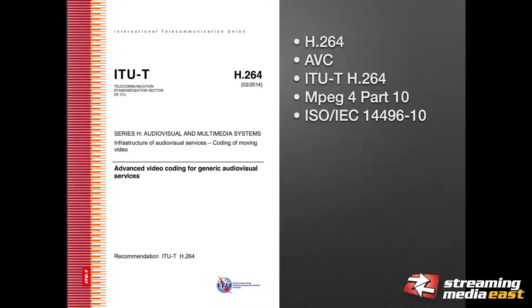Just to add to the confusion, we name these things differently. ISO calls it 14496, there's MPEG-4 Part 10, AVC — these all mean the same thing, H.264. I get the question a lot: are we using H.264 or X.264? Both — because X.264 is an implementation of H.264. Many different companies have different implementations, but they're all of the same standard, which makes them compatible.